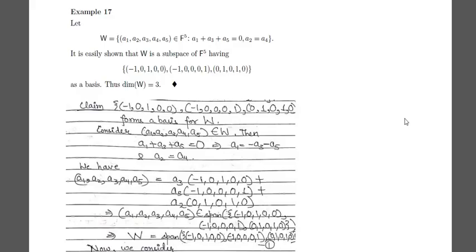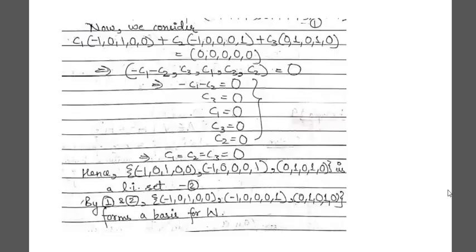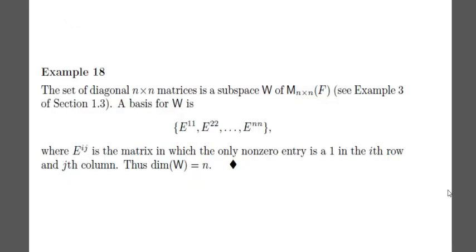Consider an example where W is a given subspace; we have to show dim(W) equals 3. We show a set of three vectors forms a basis for W. Consider any arbitrary element of W satisfying the two properties: A1 + A3 + A5 = 0 and A2 = A4. We show W equals the span of these three vectors, and that the three vectors are linearly independent by setting C1 times the first plus C2 times the second plus C3 times the third equal to the zero vector and showing all Ci equal 0. Thus this set forms a basis for W.